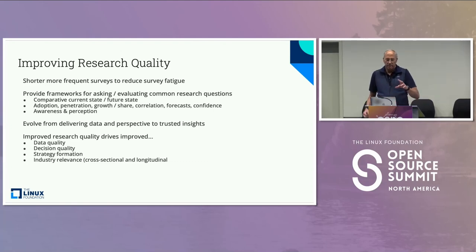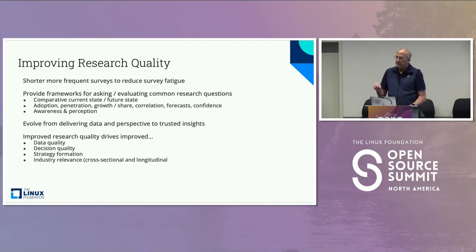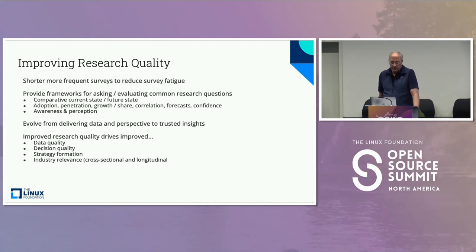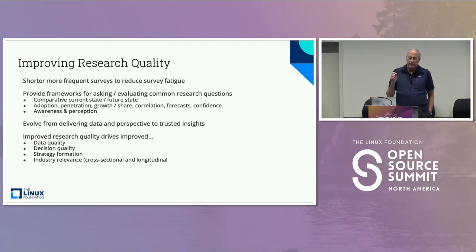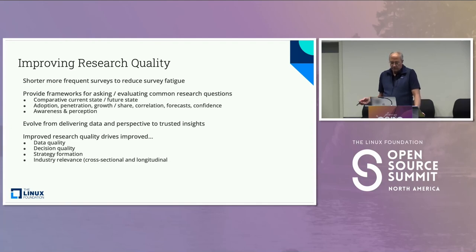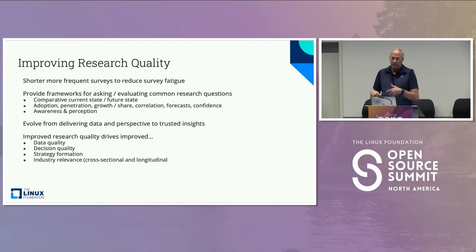My objective is to move us from delivering data and perspective — which is step one — to really being able to get to trusted insights. We can get deep insights by doing a lot of crosstabbing and driving deeper into variables to understand what's going on in a segmented way. But trusted insights is a more challenging issue. With better data quality, you have the information that allows better decision making, better strategies, more industry relevance, and with improved data quality over time you gain the ability to do longitudinal analysis to see how things are changing.